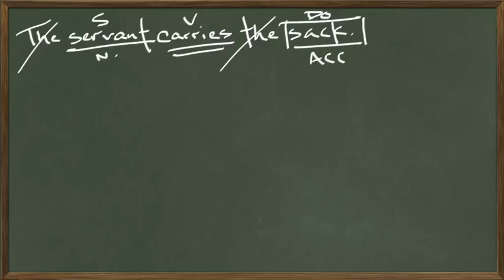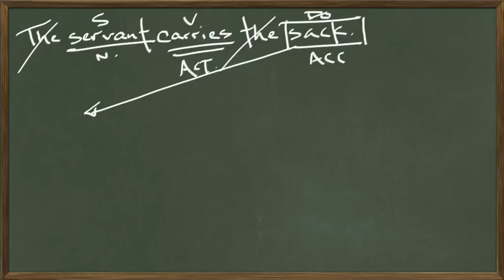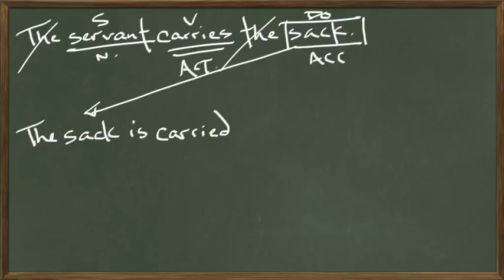This sentence is active. This is an active verb. Why is it active? It's active because this subject is doing it, and the direct object is receiving the action. We can make this verb passive by simply moving the sack to the front of the sentence. So now we have 'the sack is carried' or 'is being carried.' We could actually just leave it there.